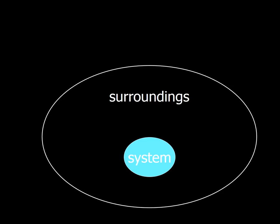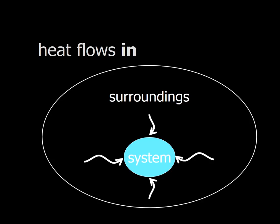So in this case, if we're defining the ice as the system and everything else is the surroundings, the heat is flowing into the system. So this is the opposite as the one we just looked at, where heat flows out.